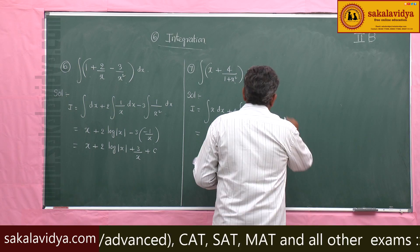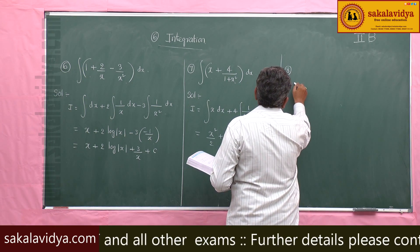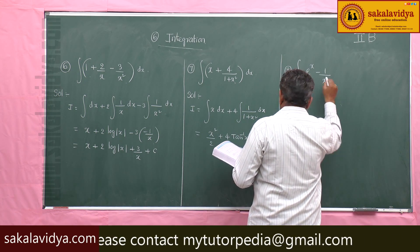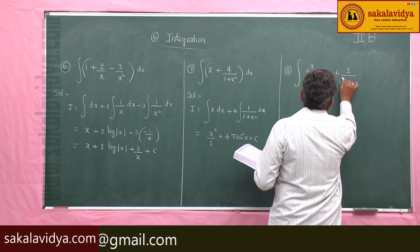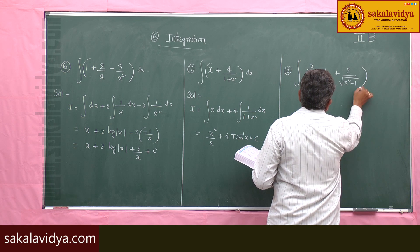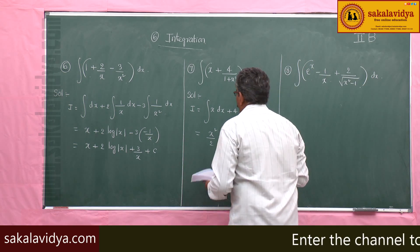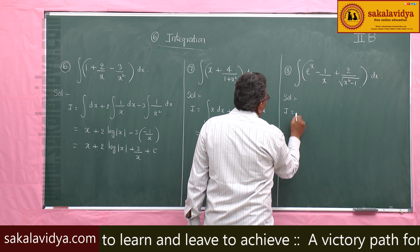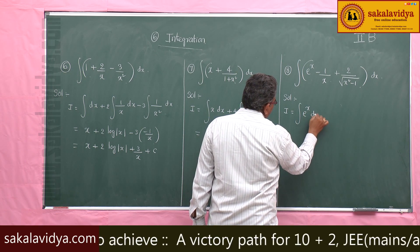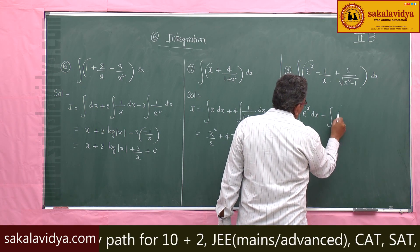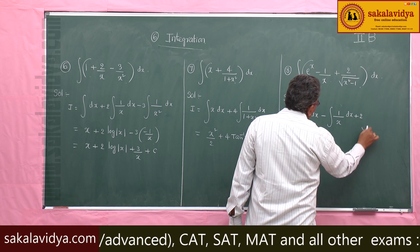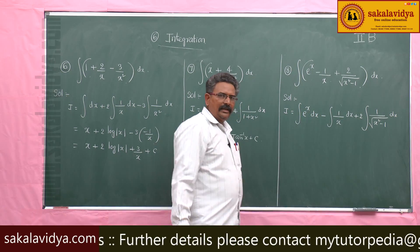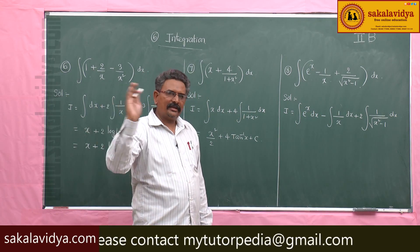Next, eighth problem: evaluate integral of e power x minus 1 by x minus 1 by x plus 2 by root of x square minus 1 dx. I is equal to integral of e power x dx, minus integral of 1 by x dx, plus 2 common integral of 1 by root of x square minus 1 dx.